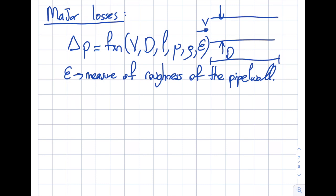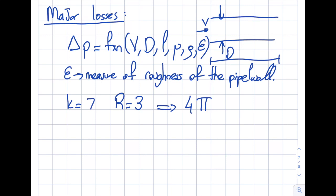Counting the variables: we have seven total (Δp, V, D, L, μ, ρ, ε), and the rank r is three (M, L, T), giving k = 7 − 3 = 4 pi terms. In the laminar case we had two pi terms; now we have four. I'll pick D, V, and ρ as repeating variables — the details follow the same pi theorem procedure covered in earlier videos.